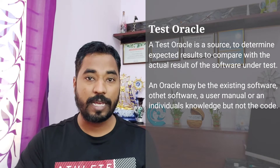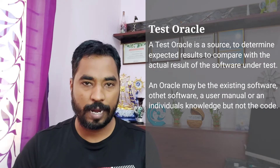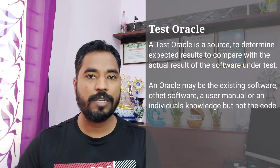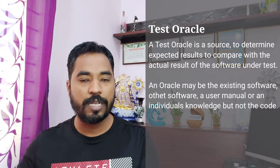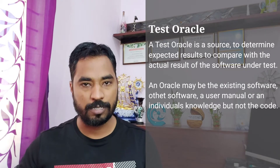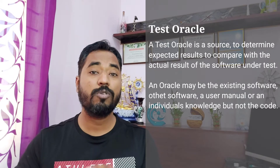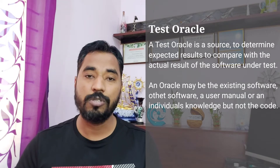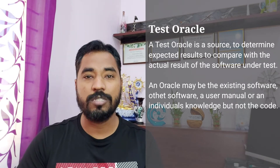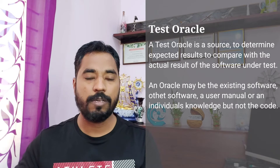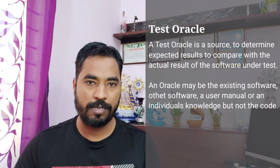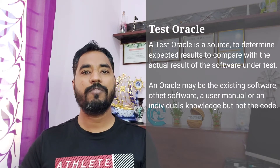The expected result has to be determined based on certain things, and that is what you call the test oracle. For example, it could be a previous version of the software you released earlier — you use it as a benchmark to determine the expected result. Or it could be your past experience, your knowledge, your standards, your requirement outcomes, or your use cases, which determine what should happen when a user performs certain actions.